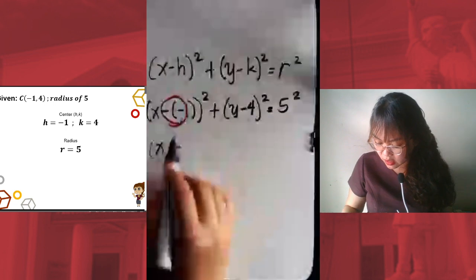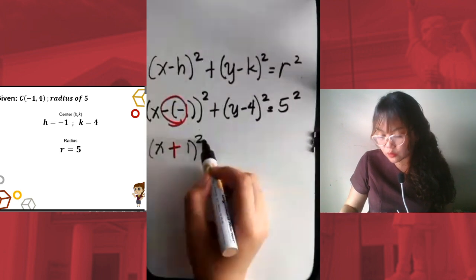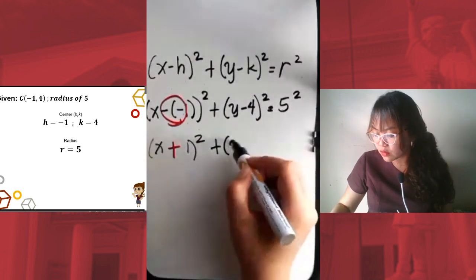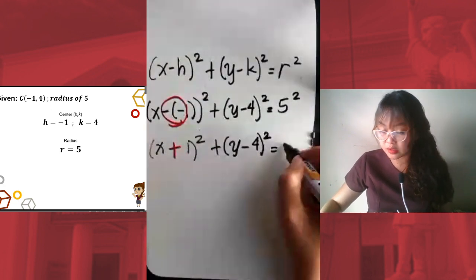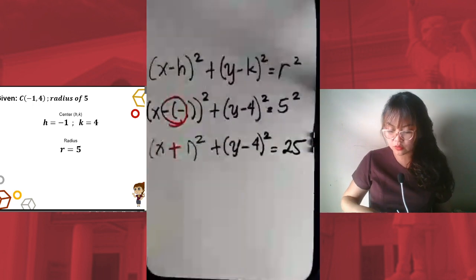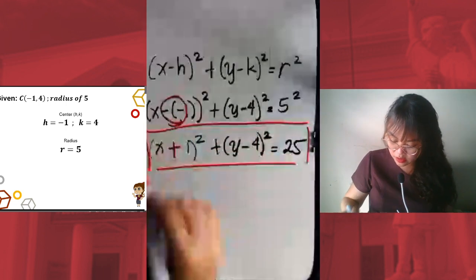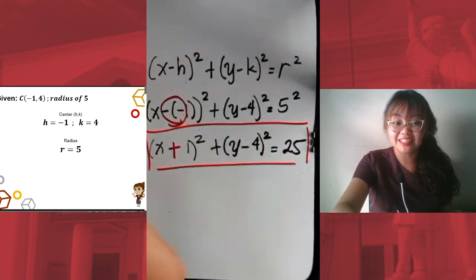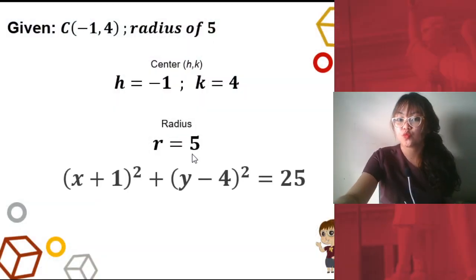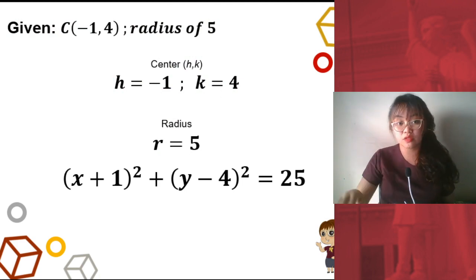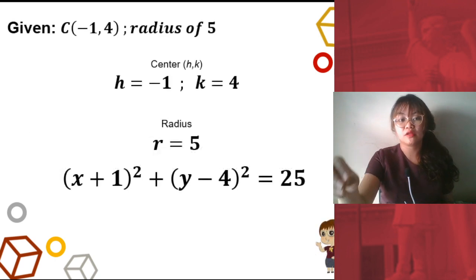Going back to our discussion: your negative 1, since you have negative negative, will become positive 1. So we have x plus 1, quantity squared; plus y minus 4, quantity squared; equals 5 squared, which is 25. Could we simplify it further? No, so this is our final answer: x plus 1 quantity squared, plus y minus 4 quantity squared, equals 25.